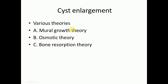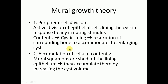Now we will discuss about cyst enlargement. There are three theories: mural growth theory, osmotic theory, and bone resorption theory. Mural growth theory is further divided into peripheral cell division and accumulation of cellular contents.